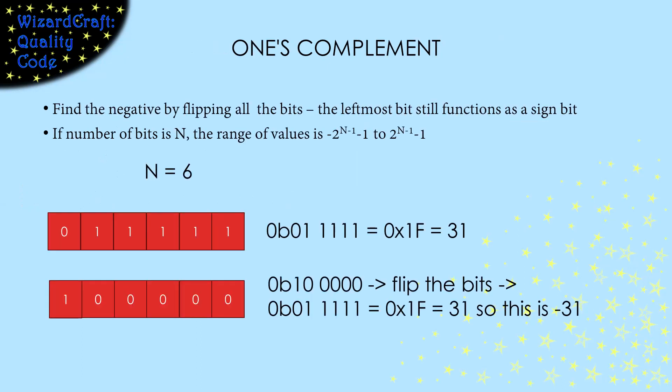Our second strategy for storing signed numbers is called one's complement. To make a number negative, we take its positive representation and flip all the bits. With this, we can still think of the leftmost bit as a sign bit.